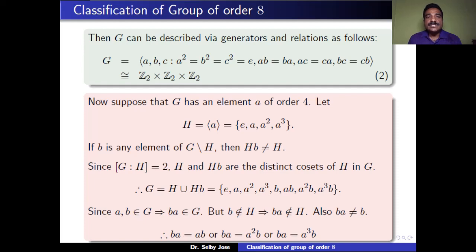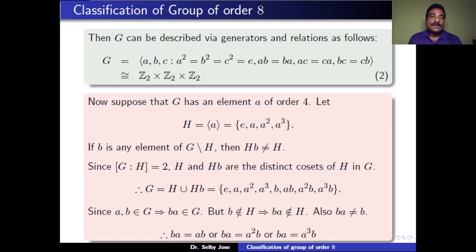We may now assume that G has at least one element of order 4. Let a be an element in G of order 4, and let H be the cyclic subgroup generated by a. Take one element b which is in G but not in H. Therefore, Hb is never equal to H because b is not in H. Since the order of G is 8 and order of H is 4, the index of H in G is 2, meaning there are exactly two distinct right cosets of H in G. Since b is not in H, H and Hb are the two distinct right cosets, and G = H ∪ Hb. So the elements of G are e, a, a², a³, b, ab, a²b, a³b.